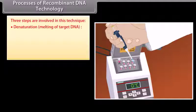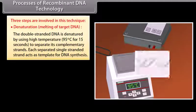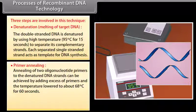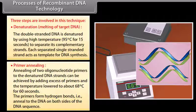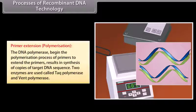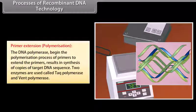Denaturation. Melting of target DNA. The double-stranded DNA is denatured by using high temperature 95 degrees Celsius for 15 seconds to separate its complementary strands. Each separated single-stranded strand acts as template for DNA synthesis. Primer annealing. Annealing of two oligonucleotide primers to the denatured DNA strands can be achieved by adding excess of primers and the temperature lowered to about 68 degrees Celsius for 60 seconds. The primers form hydrogen bonds that is annealed to the DNA on both sides of the DNA sequence. Primer extension. Polymerization. The DNA polymerase begin with polymerization process of primers to extend the primers. Results in synthesis of copies of target DNA sequence. Two enzymes are used called Taq polymerase and Vent polymerase.